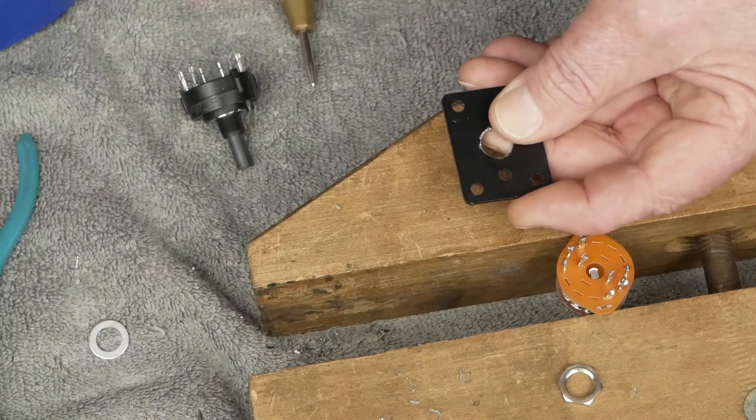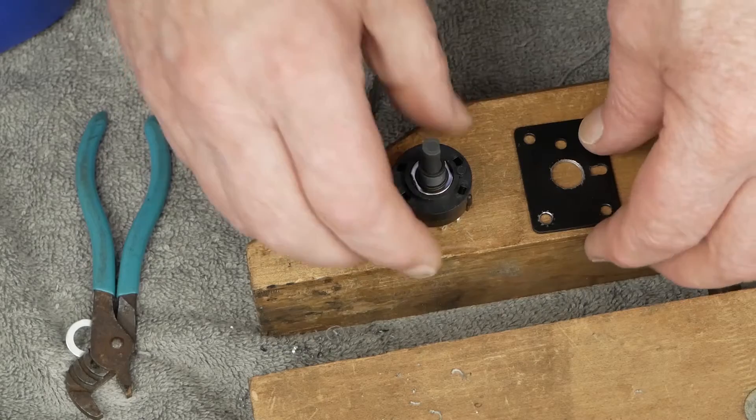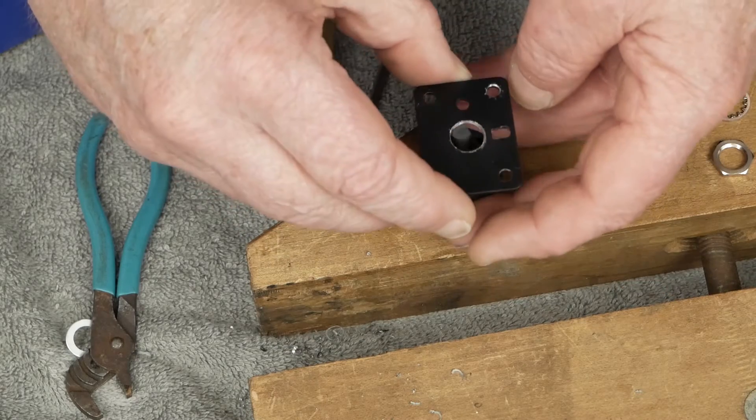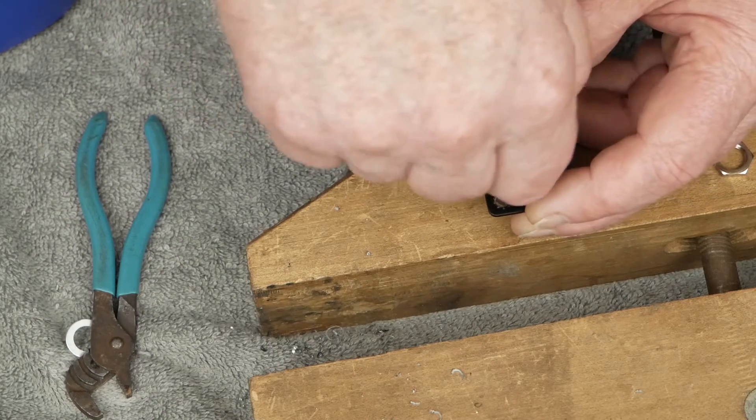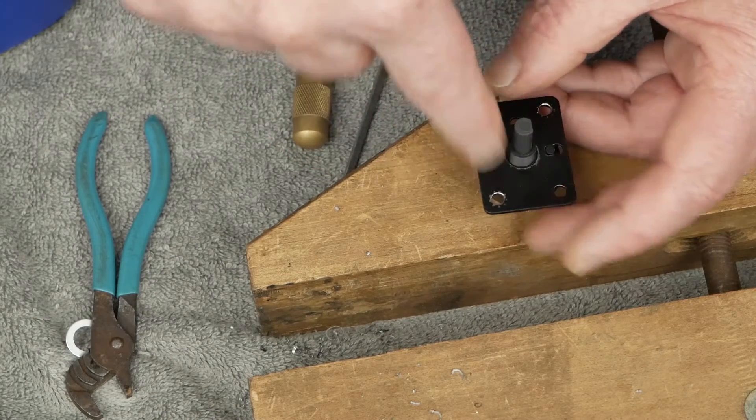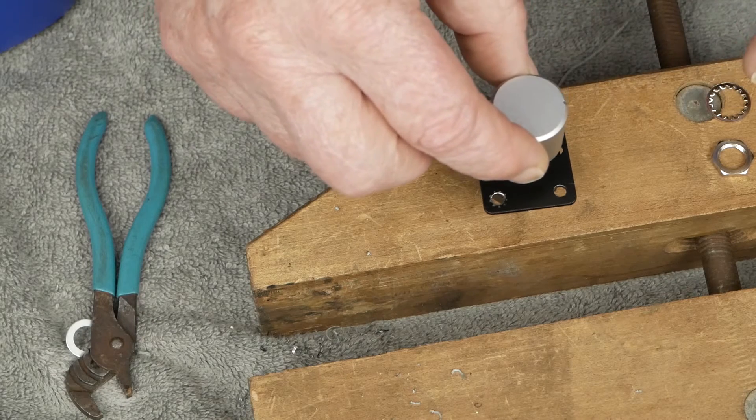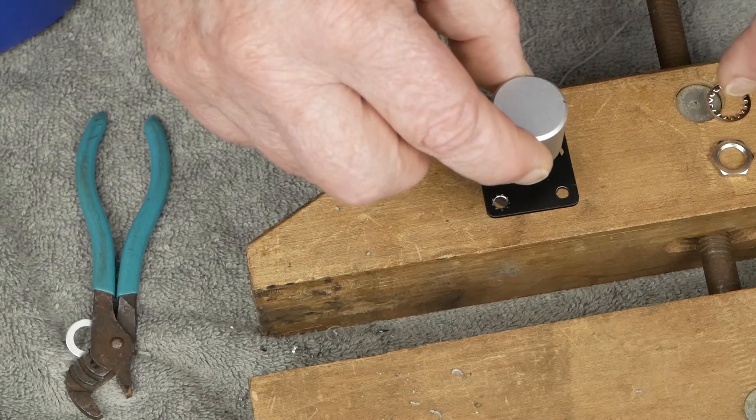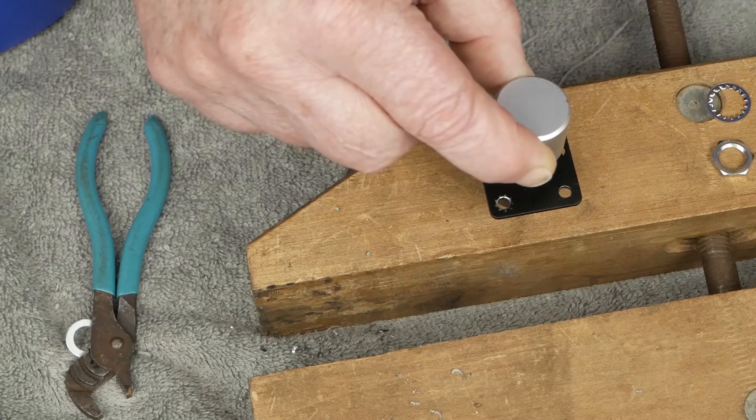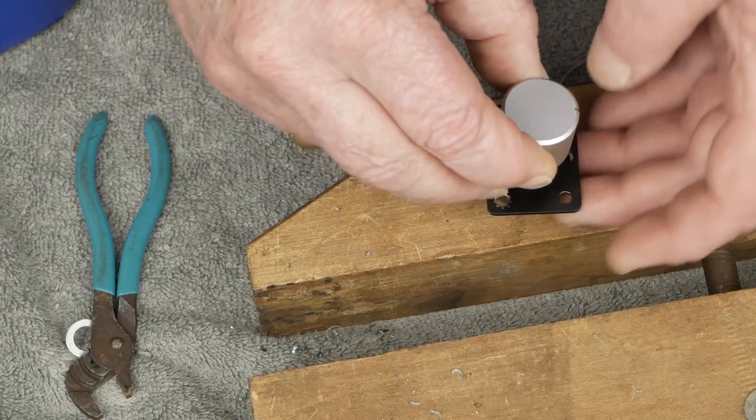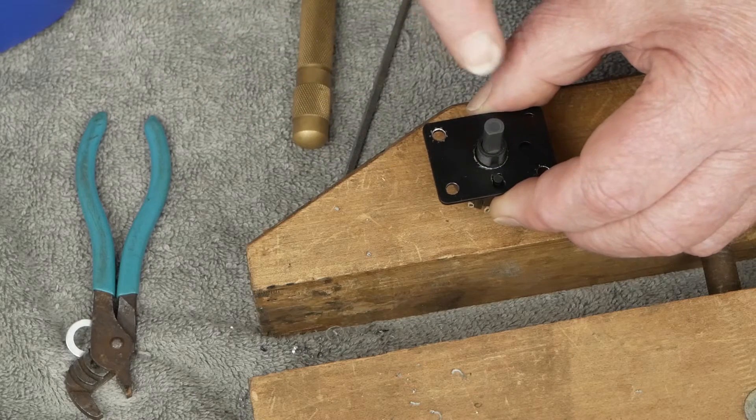You could either turn this plate around and drill a new hole or you could get a little file and just file this slot out until that hole will fit in there. That's what we're going to do. Okay, so we got this slot elongated and that allows us to get this indexed right where we want.